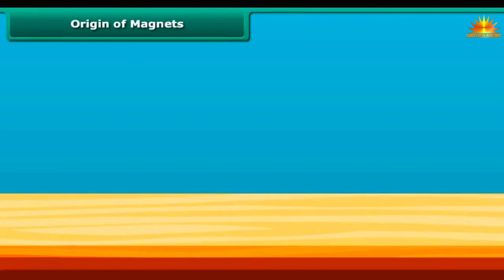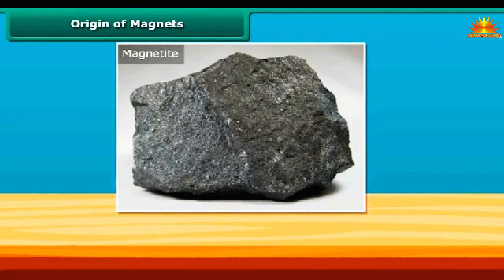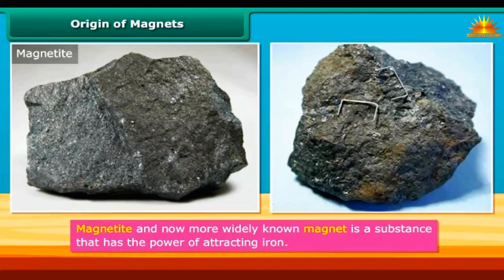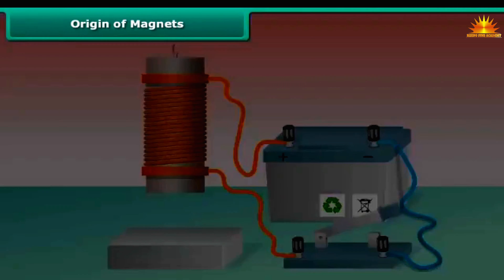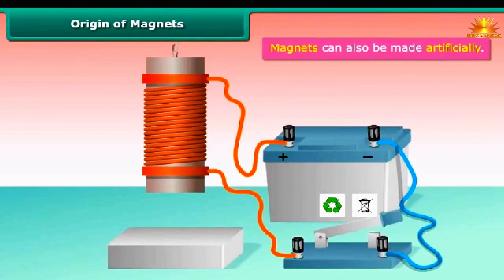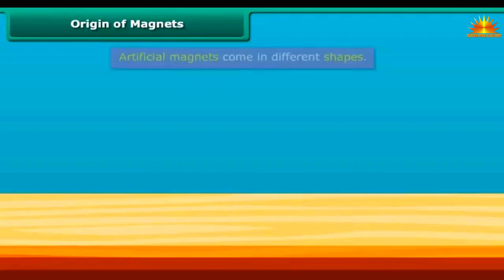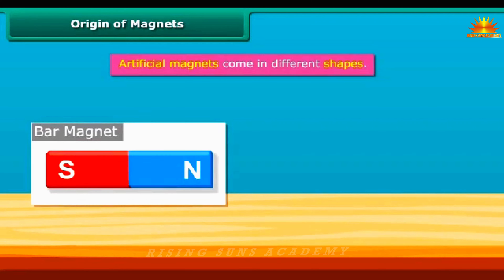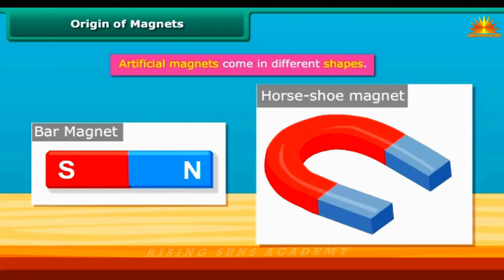Origin of Magnets. Magnetite is a natural magnet and contains iron. In the later days, this was more widely known as a magnet. A magnet is a substance that has the power of attracting iron. Magnets can also be made artificially. However, the process of making artificial magnets is a recent discovery. Artificial magnets come in different shapes — for example, bar magnet, horseshoe magnet, etc.